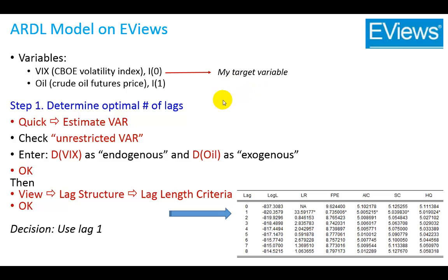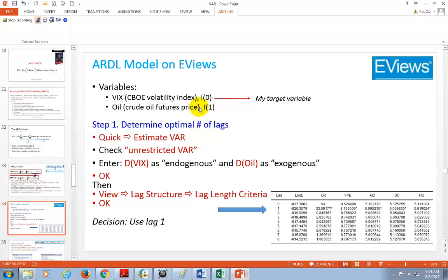Let's go ahead and go to EViews and demo this. The two variables I'm going to use in this bivariate analysis are VIX — the Chicago Board Options Exchange Volatility Index — which I found to be I(0), stationary at level, and crude oil futures price, which I found to be stationary only after first differencing. So we have a group of I(0) and I(1) variables. I'm going to position VIX as my target variable.